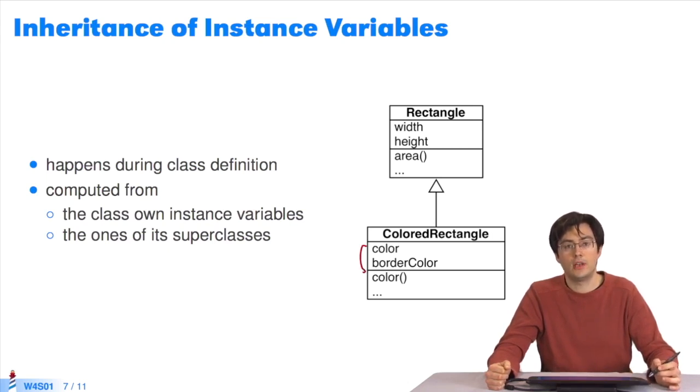And you merge them with all the instance variables defined in the superclass and the line of the superclasses, all the way up to the object. Here, the instance variables of colored rectangle will be width, height, color and border color.